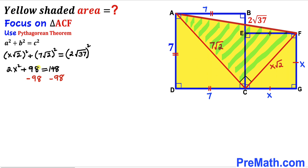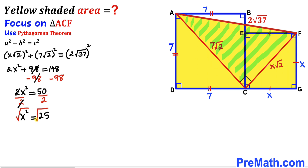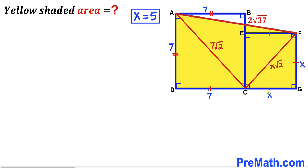Subtracting 98 from both sides gives 2X² = 50. Dividing both sides by 2 gives X² = 25. Taking the square root, X equals positive 5 units. So the side length of the smaller square is 5 units.